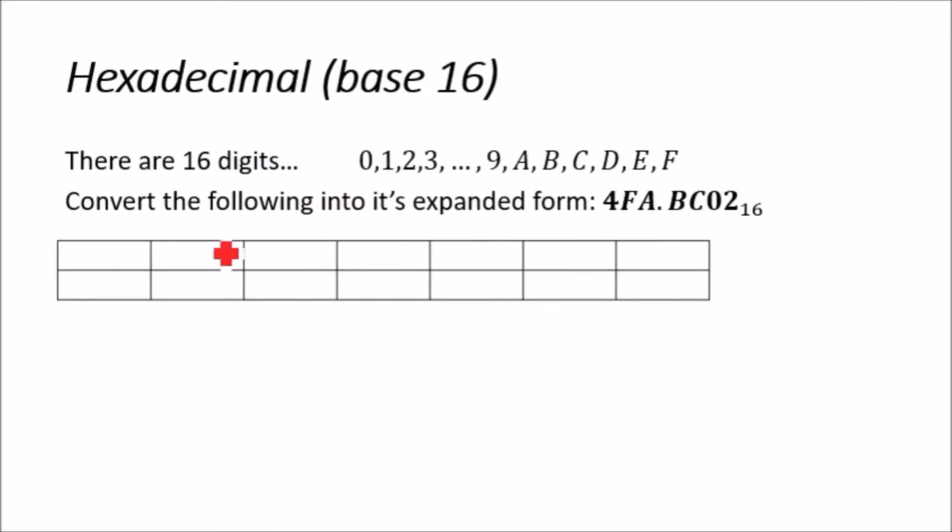Let's copy all this into the table below. We're going to have 4, F, A, point, B, C, 0, and 2. Now, because we're working in base 16, each of them...